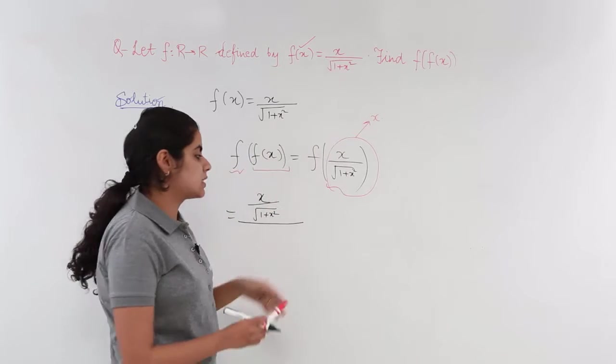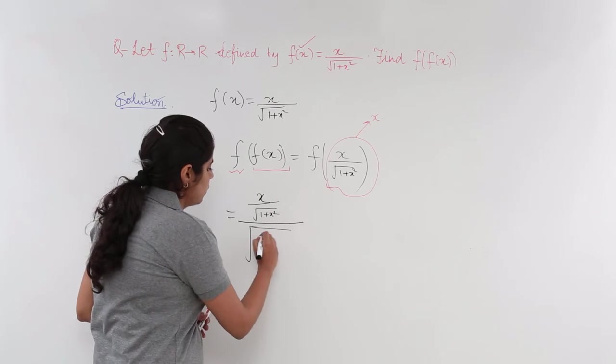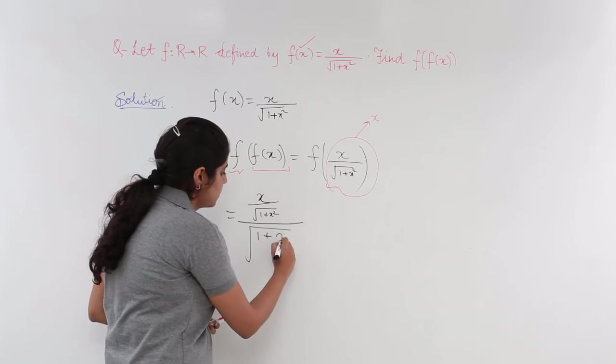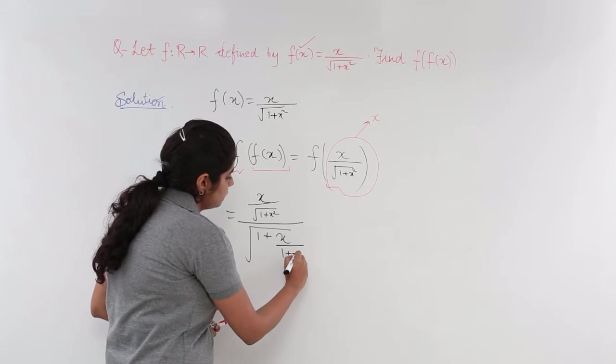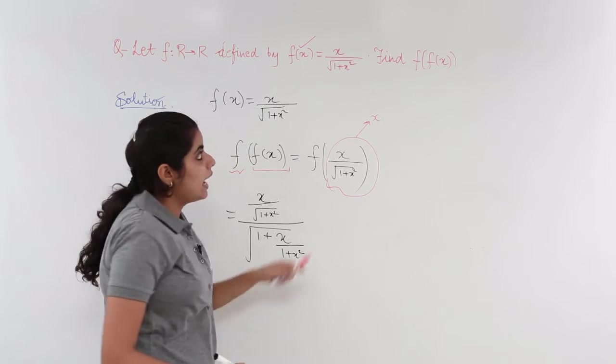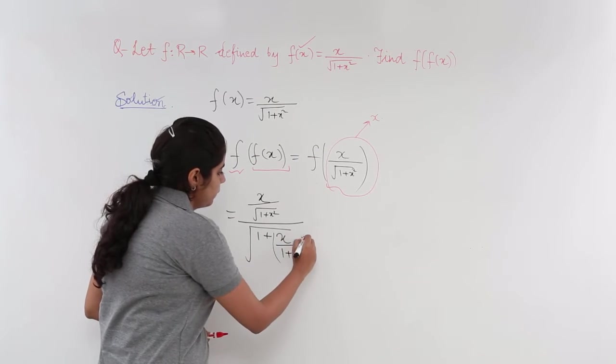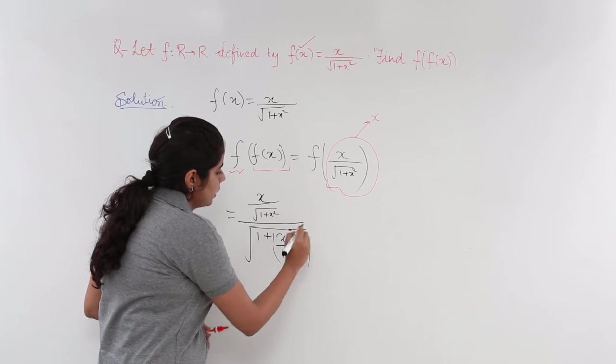Under root 1 plus x square, we have under root 1 plus x square. What is x? x is the whole thing. So, we need to substitute it. And it is the whole square. So, we need to write the whole square as well.